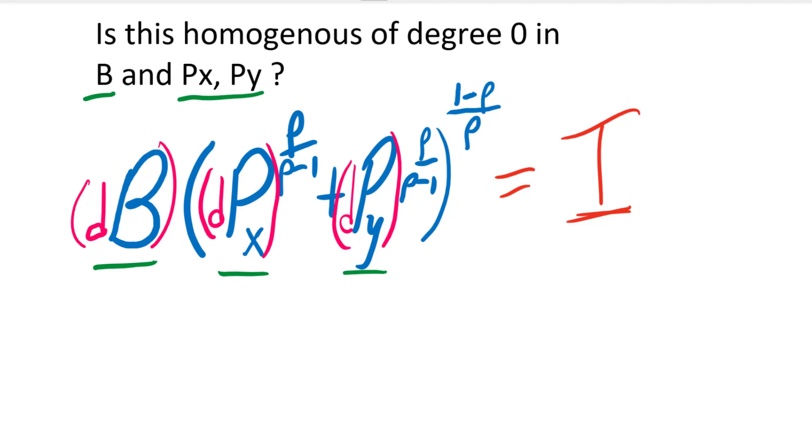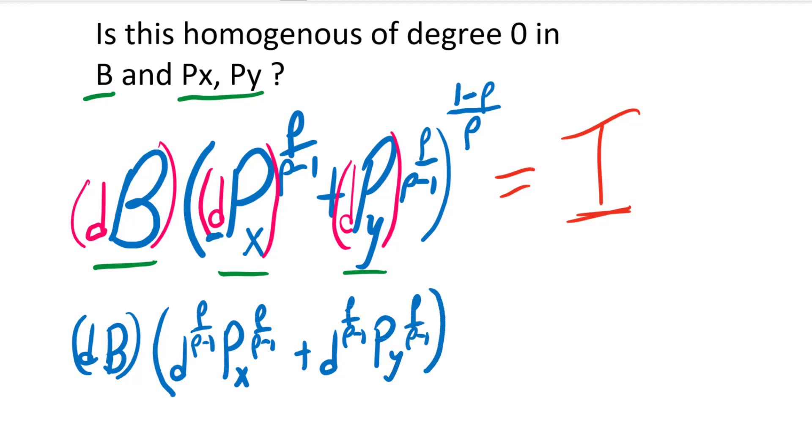So let's just rewrite this. We're going to have DB over here. And then we're going to mostly be focusing on the inside of this function. So what I'm going to do is raise the D to the ρ/(ρ-1) power here. I'm just going to bring it outside. So D^(ρ/(ρ-1)), price of X to the ρ/(ρ-1). Plus, do the same thing over here: price of Y^(ρ/(ρ-1)). And then 1-ρ/ρ.